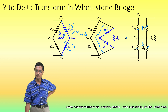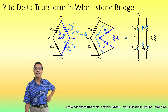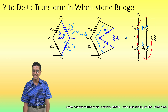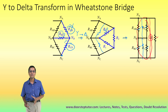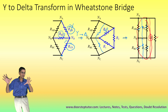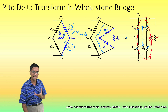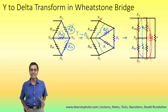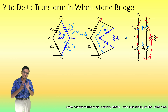After converting from the Y to the delta arrangement, we notice that RAB and R3 are in parallel, and RBC and R1 are also in parallel. We convert each parallel pair to an equivalent resistance. Then those two resulting resistances are in series, so we add them. Finally that combined resistance is in parallel with R2, allowing us to use the parallel formula again and find the equivalent resistance of the entire Wheatstone bridge without using the Kirchhoff laws.